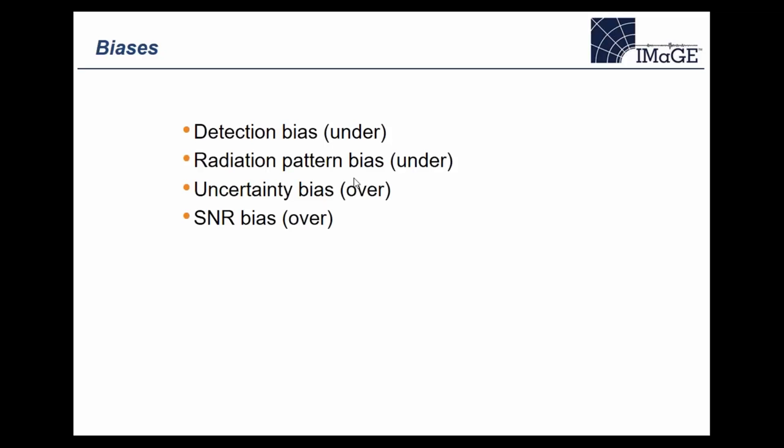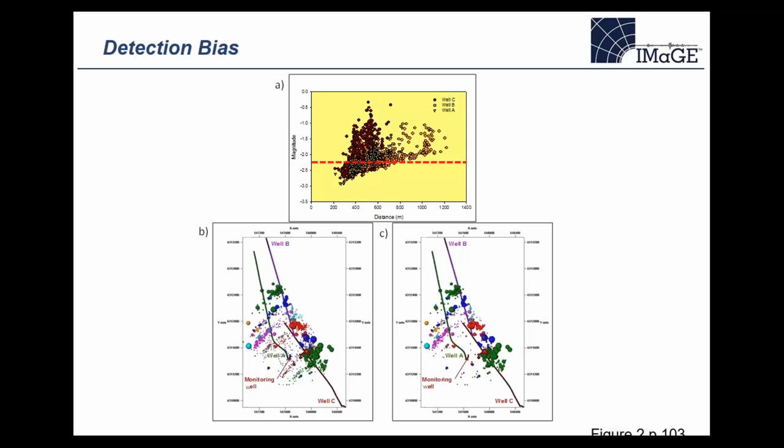At the end of each bias in the list, I've indicated either 'under' or 'over': 'under' meaning the bias might cause us to underestimate the fracture geometry — that would be the case for detection bias or potential radiation pattern bias. There are also biases that could cause overestimation, due to location uncertainty and signal-to-noise ratio. I'll talk about these individually, show examples, and give suggestions on how to treat them.